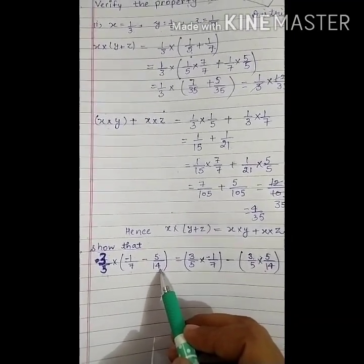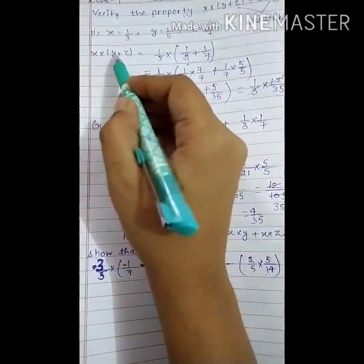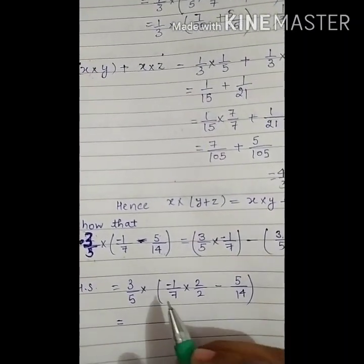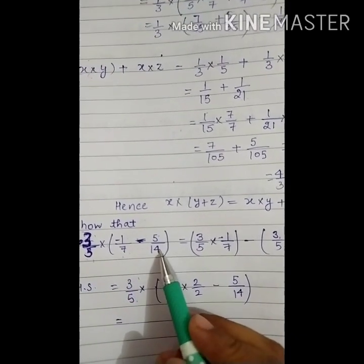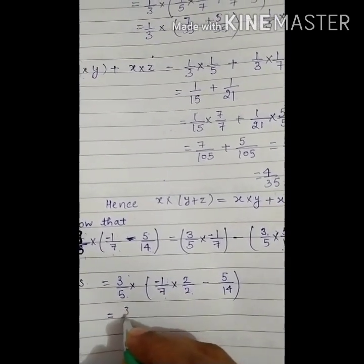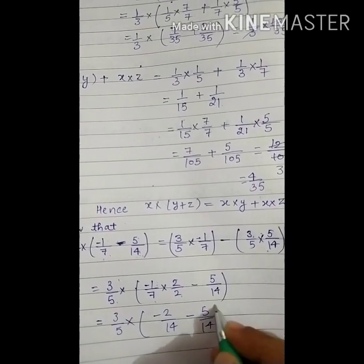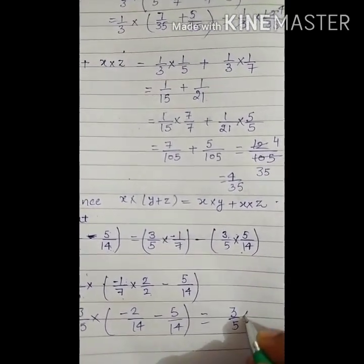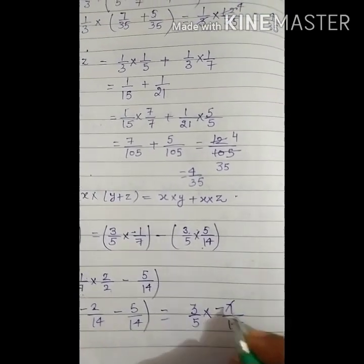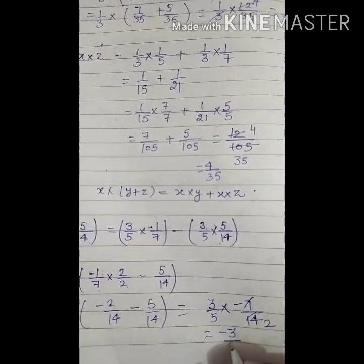This is also known as distributive property over subtraction. In the above question we solved distributive property over addition; now we start with the left hand side: 3 upon 5 multiplied by (minus 1 upon 7 minus 5 upon 14). LCM of 7 and 14 is 14, so multiply and divide minus 1 upon 7 by 2, giving 3 upon 5 multiplied by (minus 2 upon 14 minus 5 upon 14), which equals 3 upon 5 multiplied by (minus 7 upon 14). Since 7 ones are 7 and 7 twos are 14, this gives 3 multiplied by minus 1 upon 10, which is minus 3 upon 10.